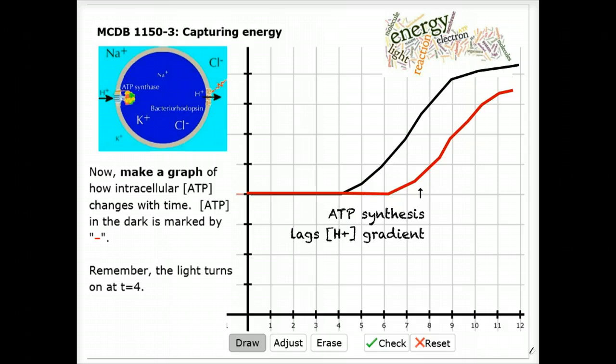It's pretty simple to understand why. It takes a while in the presence of the light to generate an electrochemical gradient — a hydrogen ion gradient — large enough to drive the unfavorable ATP synthesis reaction.